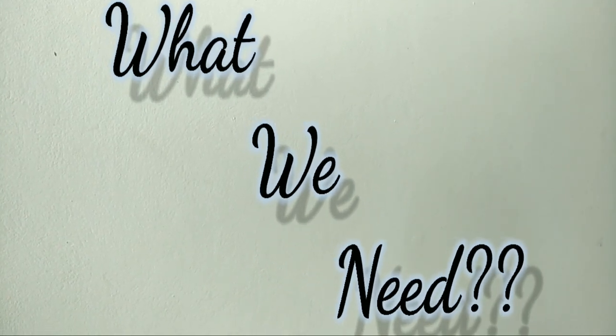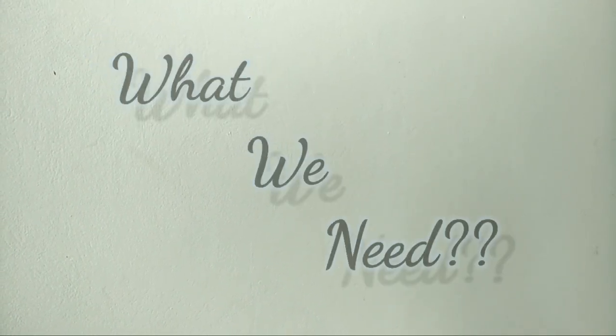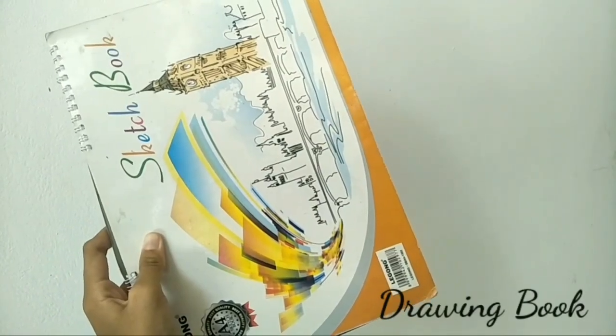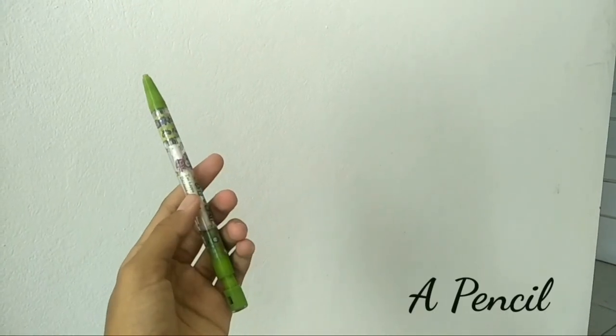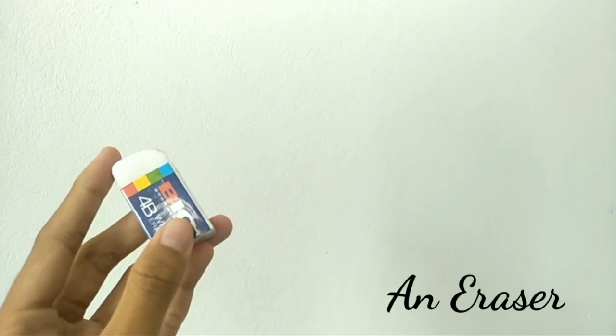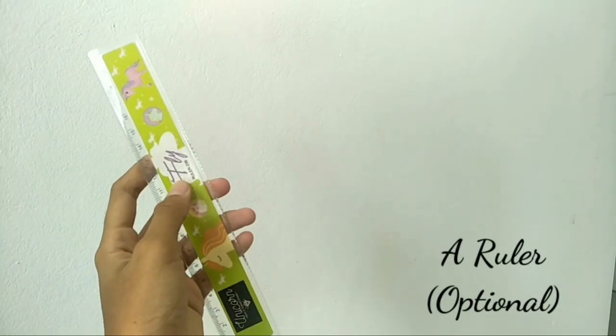These are the things that we need to draw a semi-realistic girl's eye. They are a drawing book or sketchbook, a pencil, an eraser, a cotton bud, and also a ruler.